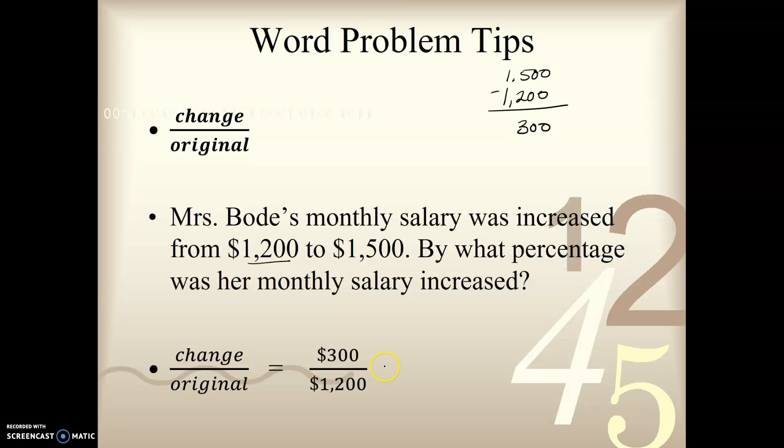So that's going to go on the bottom. So from here, we'll just, let's use method 1, and to get that denominator to 100, we're going to convert this to a percentage. So we'll divide by 12 over 12. So if I divide 1,200 by 12, of course that's just 100, right? And then 300 divided by 12 is going to be 25. And so my answer is Mrs. Bodie's salary was increased by 25%.